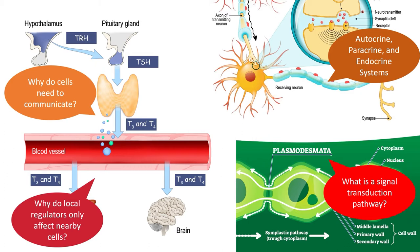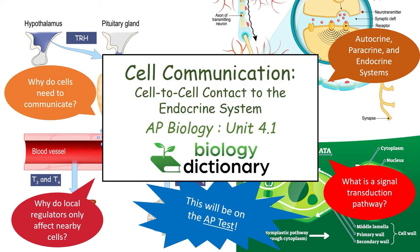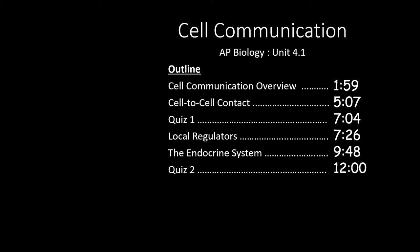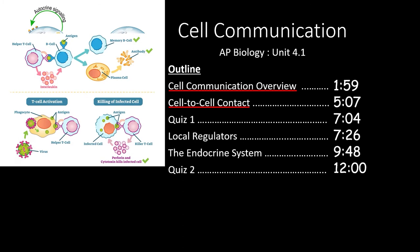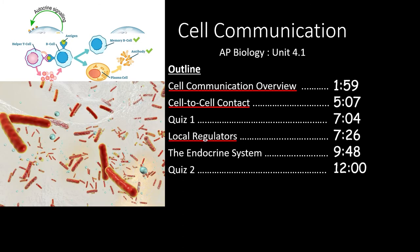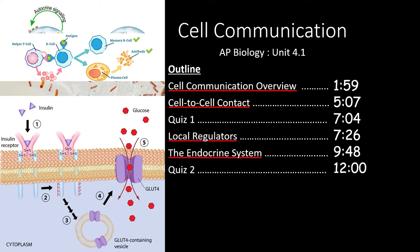This information will definitely be incorporated into the AP test, so stick with us as we cover the basics of cell communication. This video covers section 4.1 in the AP biology curriculum. We'll start with an overview of what cell communication is and the different ways it functions, then dive into the different types based on the distance the signal travels — from direct cell-to-cell contact, to local regulator molecules, to hormone signals that travel throughout an entire organism.